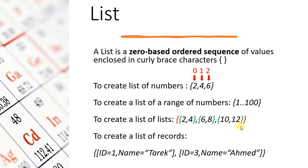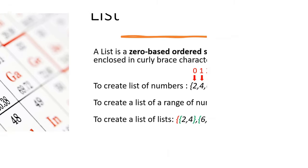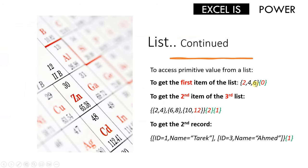You can also create a list of records. Between square brackets I have a record with two fields: the first one is ID and the second one is name. I have two records inside one big list. So you can create a list of single (primitive) values like two, four, six; a list of a range; lists inside a list; and also a list of records.